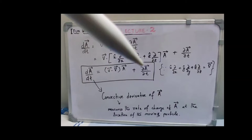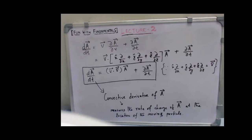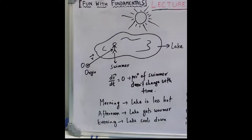This expression gives the convective derivative of the magnetic vector potential A — that is, the time rate of change of A at the location of the moving particle. To understand the concept of convective derivative, let us take the following example.